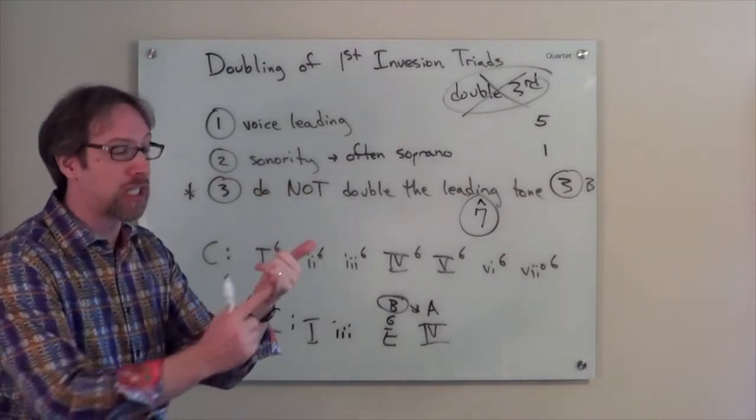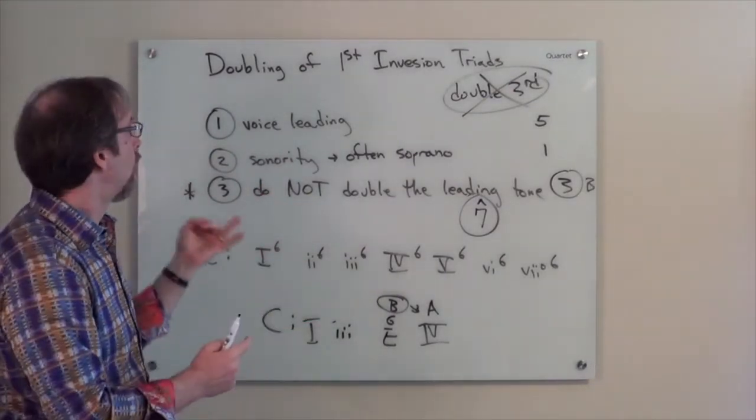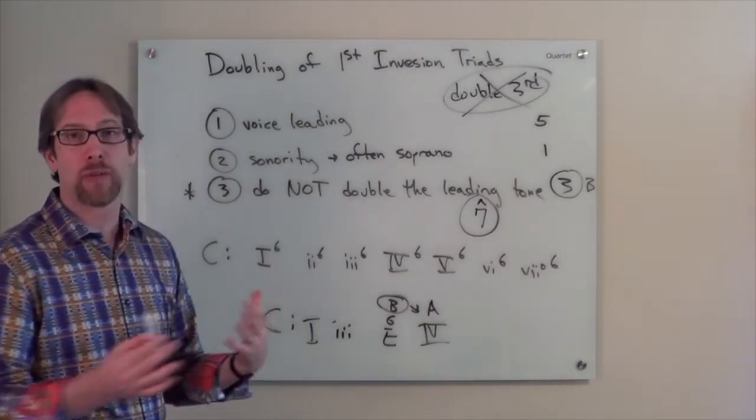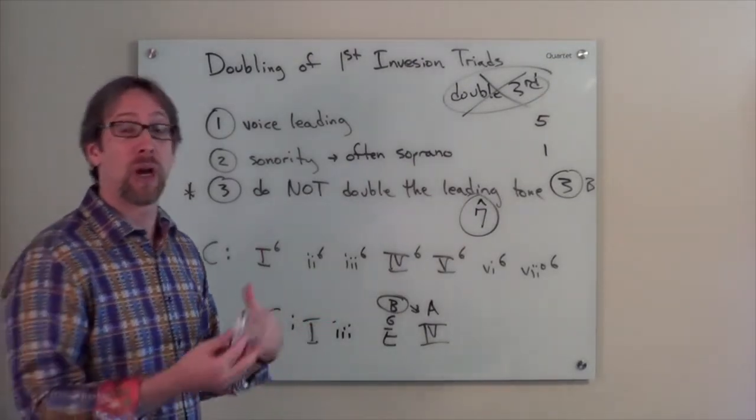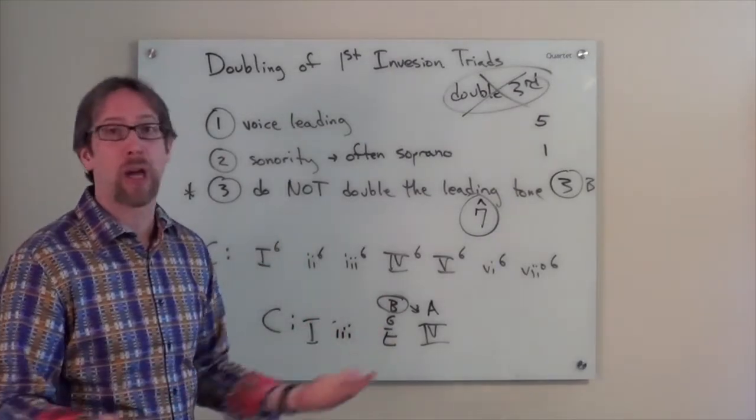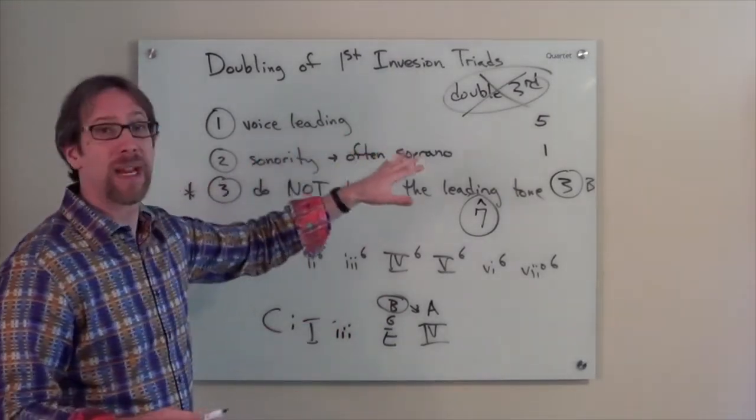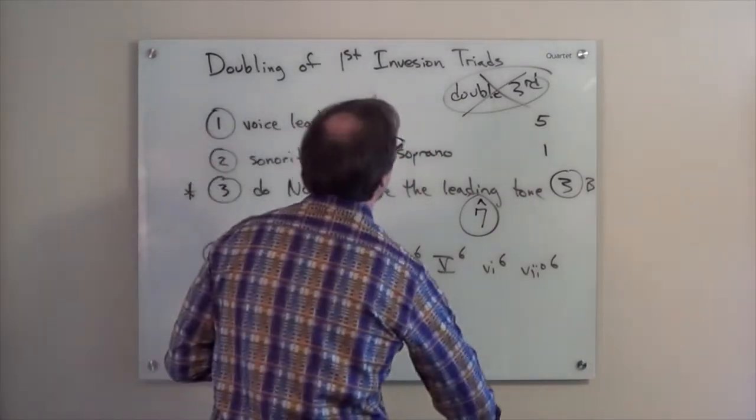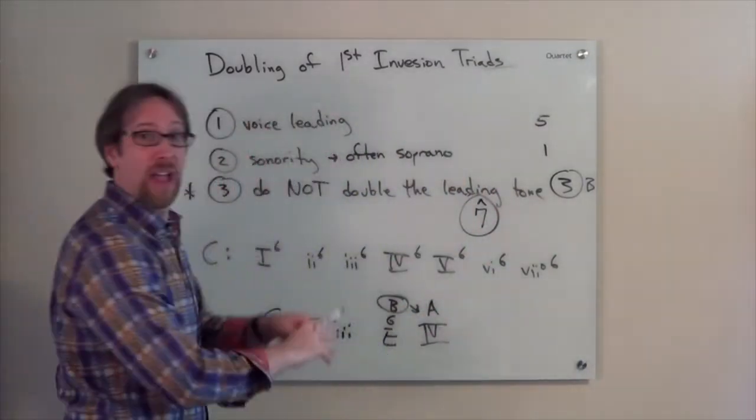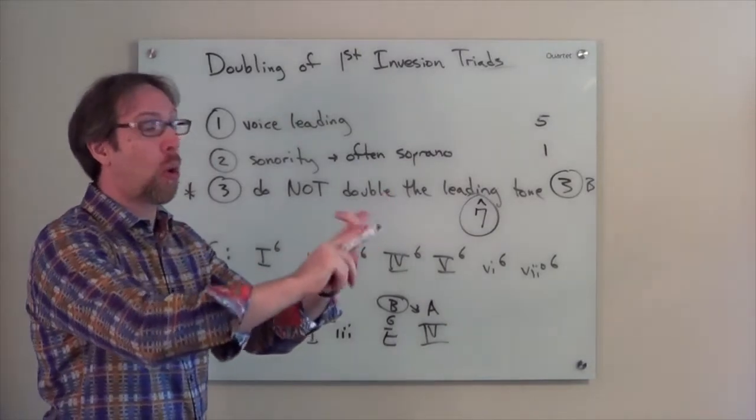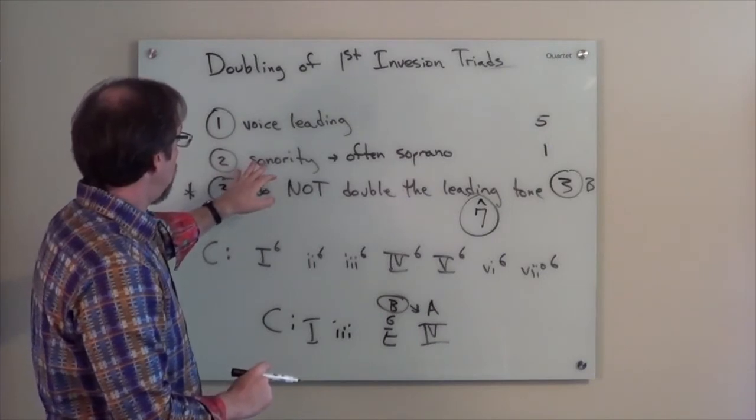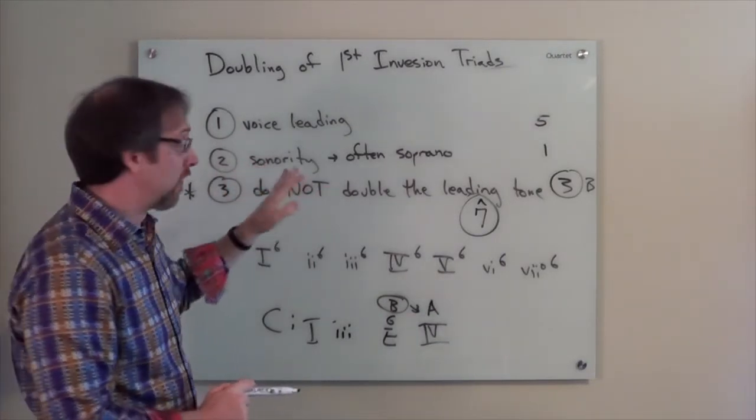Sometimes you can make exceptions when it's in an inner voice, but the tendency is for it to resolve up. That's the tendency of a leading tone. But yes, you can have scale degree seven, for example, in a three chord where it doesn't function like a leading tone. But the short answer where you know you can't go wrong is just don't double scale degree seven, and you're good. Double anything else you want.